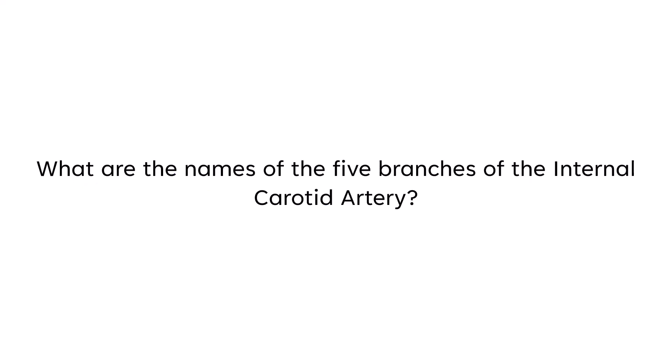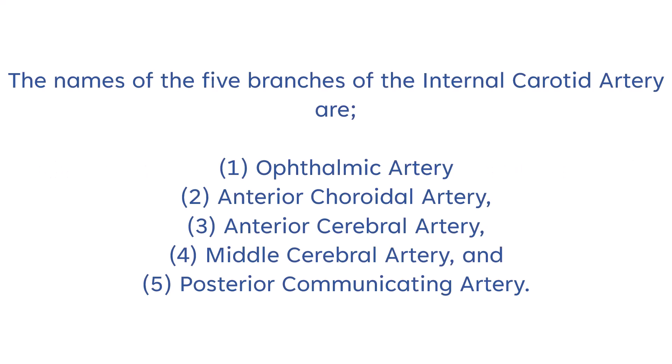What are the names of the five branches of the internal carotid artery? The names of the five branches of the internal carotid artery are: ophthalmic artery, anterior choroidal artery, anterior cerebral artery, middle cerebral artery, and posterior communicating artery.